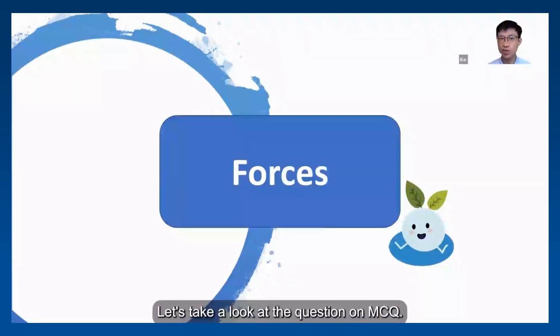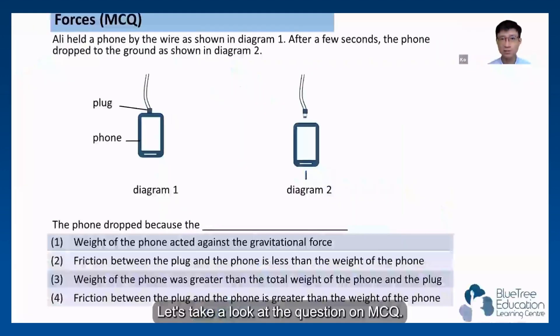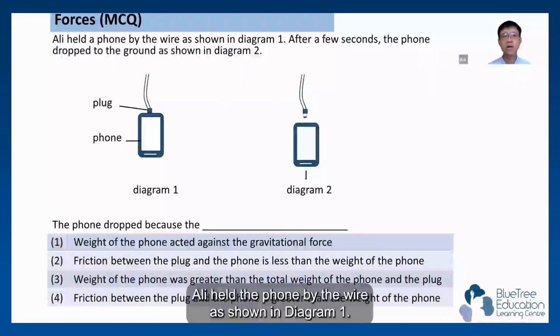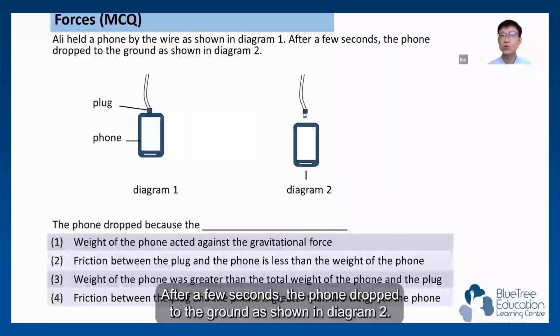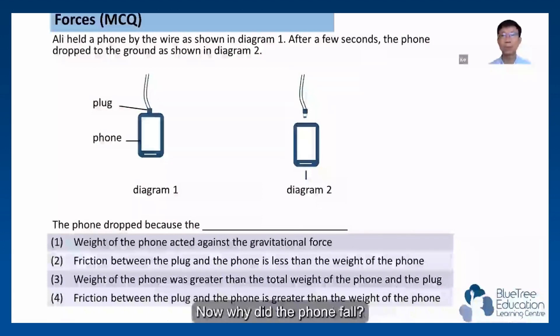Let's take a look at the question on MCQ. A phone is held by the wire as shown in diagram 1. After a few seconds, the phone dropped to the ground as shown in diagram 2. Why did the phone fall?